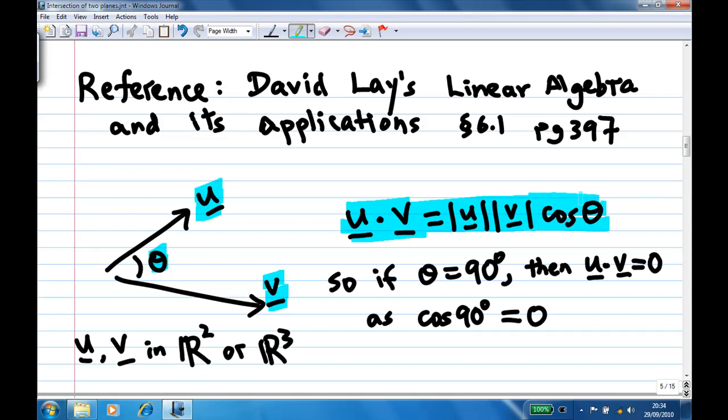Now in this case, if theta is equal to 90 degrees, then we know cosine 90 is zero. Therefore, u dot v will be zero. This is how we can tell whether two vectors in three-dimensional space are perpendicular.